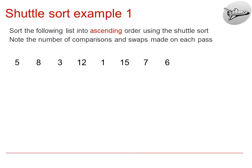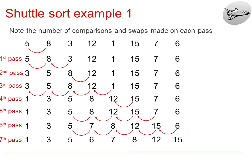Let's look at an example. Here we are asked to sort the following list into ascending order using the Shuttle Sort. We should note the number of comparisons and swaps made on each pass. Let's talk through this. The first pass, we just compare the 8 and the 5, and we don't need to make a swap because they're already in ascending order. The list does not look any different at the end of the first pass.